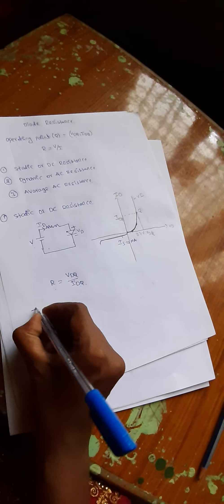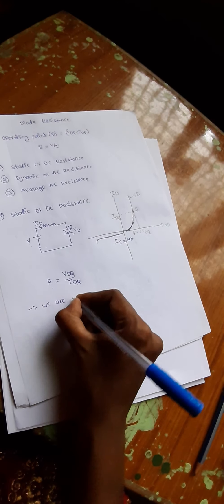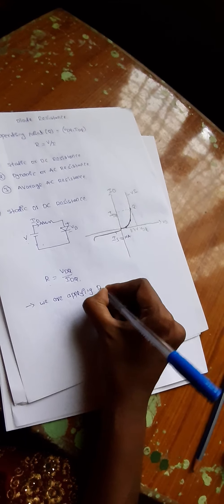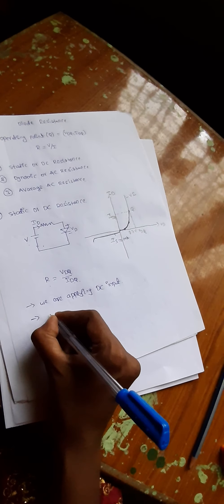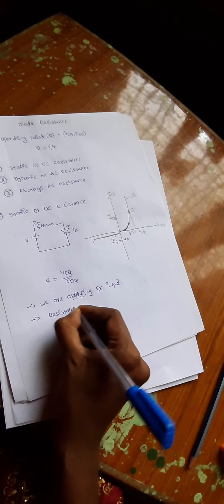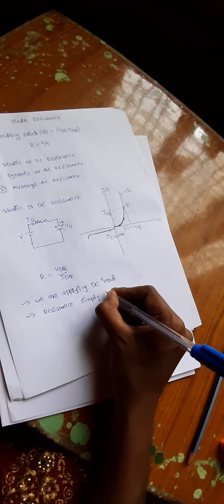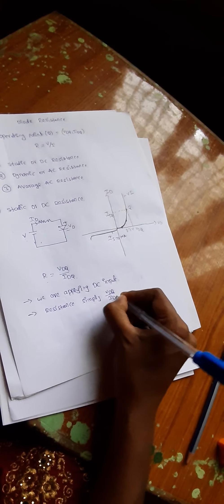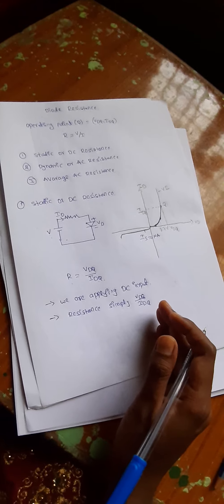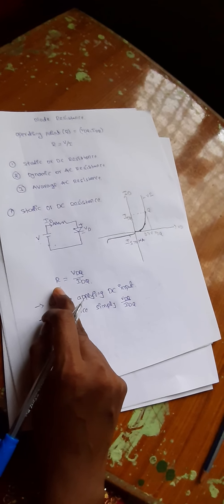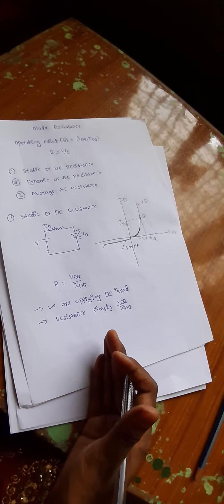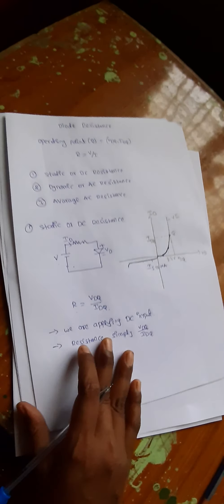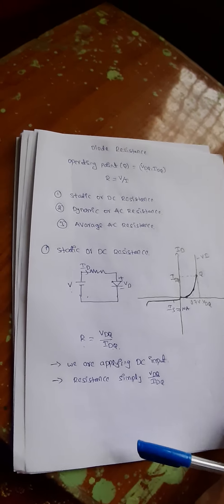The first point to consider is that we are applying a DC input. For a DC input, the resistance is simply Vdq over Idq. The operating point does not change with time, so Vdq over Idq gives us the resistance. As resistance increases, current through the diode decreases — they are inversely proportional. Considering an example will give you more clarity about this concept.